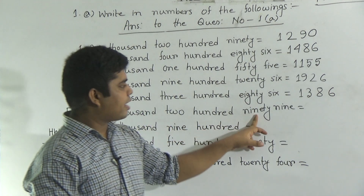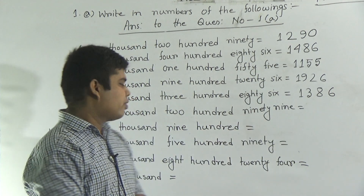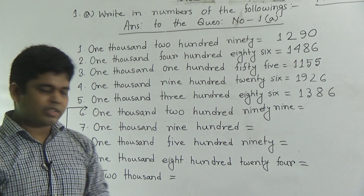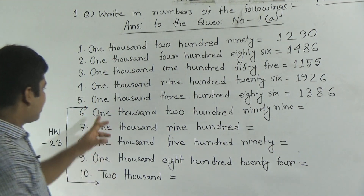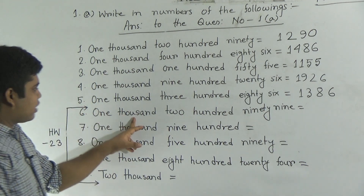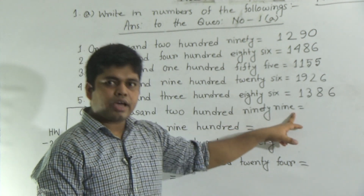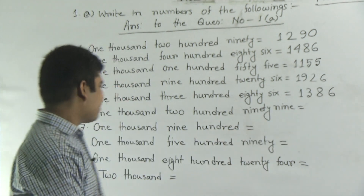1299. How can you write this? This is totally done by yourself. 1299.